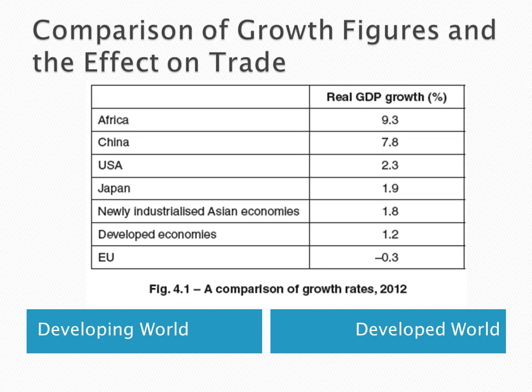Here we see the comparison of growth in the developed and developing world. It is quite clear that the fastest growth has been in the most developing parts of the world and the slowest growth in the most developed parts of the world. The exception is the United States which by 2012 had picked up to a reasonable level of growth, even as the EU still maintains a stagnant economy.